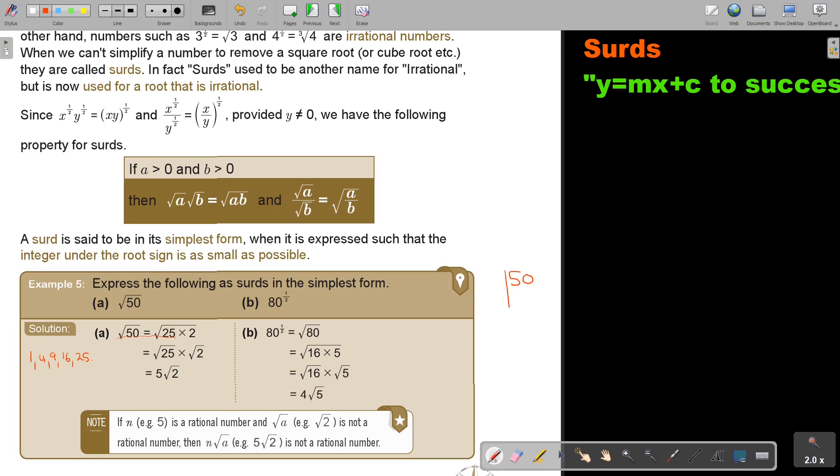If you take 50 and you start, you write it in prime factors. So, you start, 2 can go in 25, and then 5 can go in 5, and 5 can go in 1. So, basically, I can write, and I'm going to do it like here, I can write 2 times 5 to the power of 2.